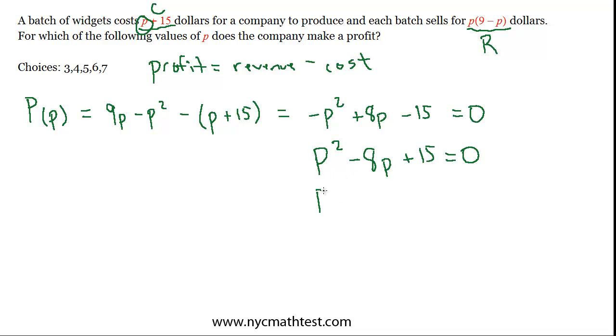we'll get P minus 3, P minus 5 equals 0. And then we notice that P equals 3 and P equals 5 both lead to this expression equaling 0.